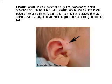Pre-auricular sinuses are common congenital malformations first described in 1864 by Huesinger. They are frequently noted on routine examination as small pits adjacent to the external ear, usually at the anterior margin of the ascending limb of the helix.